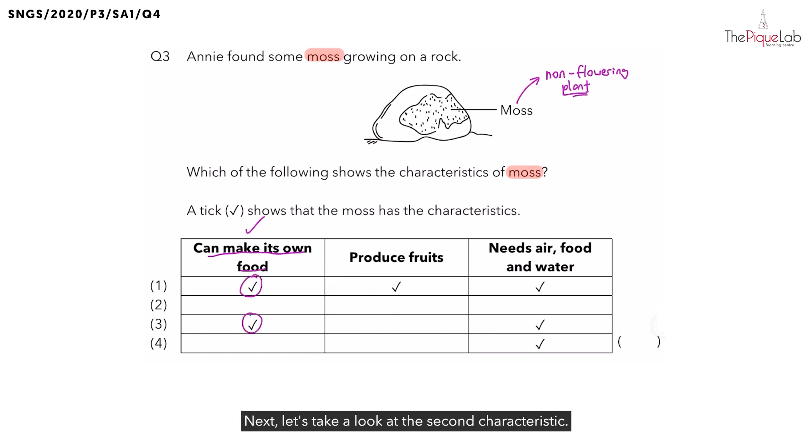Next, let's take a look at the second characteristic. Now, is the moss able to produce its own fruits? In order to answer this, let's take a look at the moss. Remember, we said, what kind of plant is this? This is a non-flowering plant. And because it is a non-flowering plant, does it bear flowers? No.